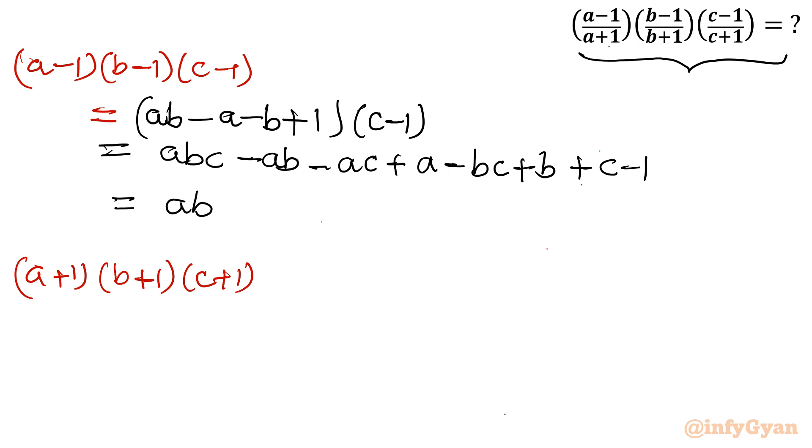Once I write all three terms, abc is only single time, so I will write abc. Now minus ab minus bc minus ca, so I will take minus outside: ab + bc + ca. And then we have a + b + c, sum of roots. I will put direct value and minus 1.